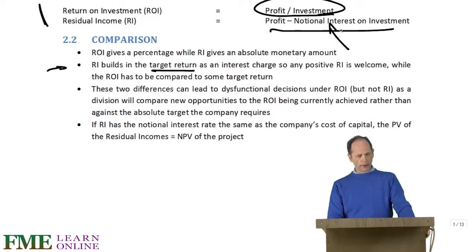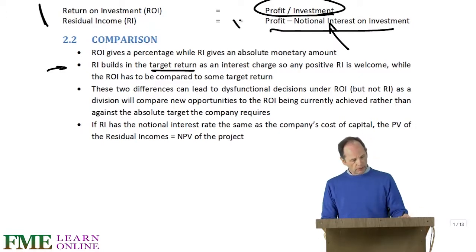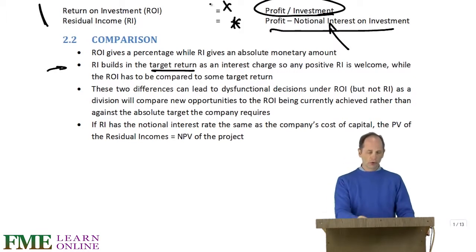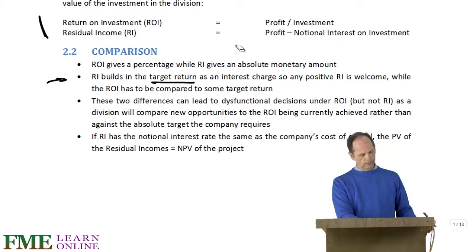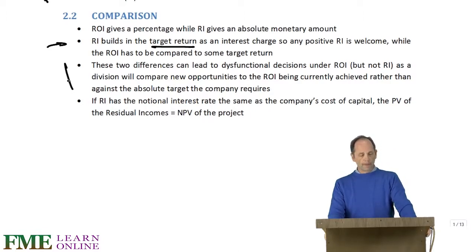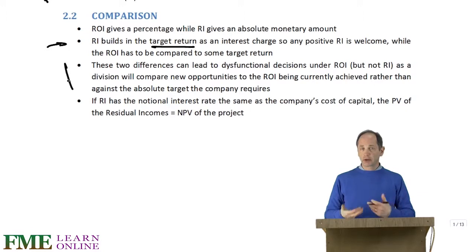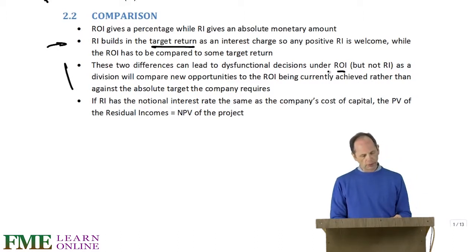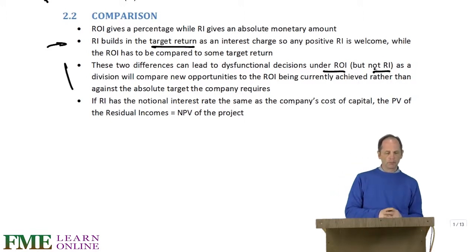Whereas ROI has to be compared against some target percentage. With Residual Income, anything positive is going to be welcome and will increase residual income. Whereas with Return on Investment, you can't say whether they've done well until you compare against the target. These two differences can lead to what are called dysfunctional decisions, or a lack of goal congruence, where the divisional manager does things in the division's best interest - and therefore his bonus's best interest - which are not in the best interest of the company overall. This is possibly a problem with ROI, but won't be with Residual Income for those two reasons.